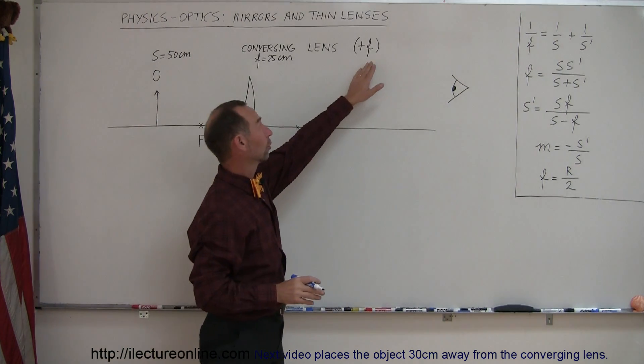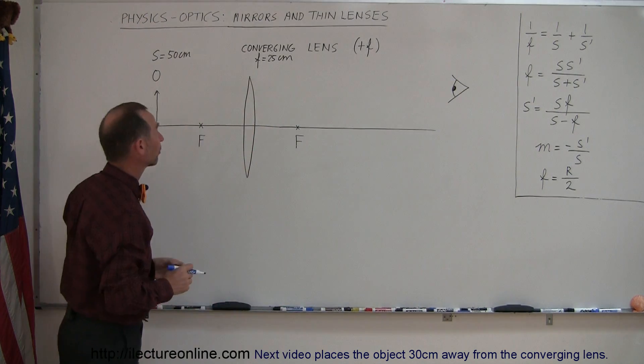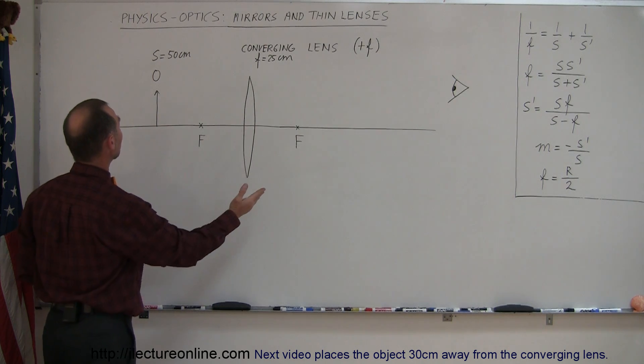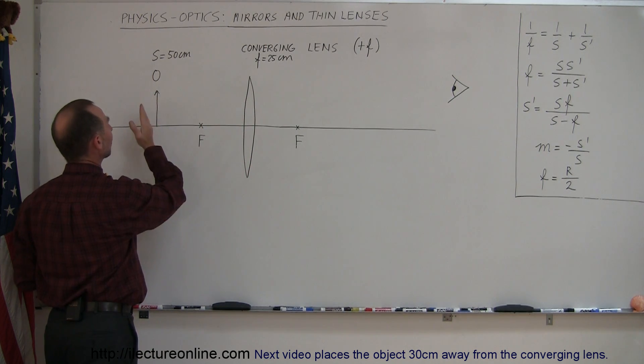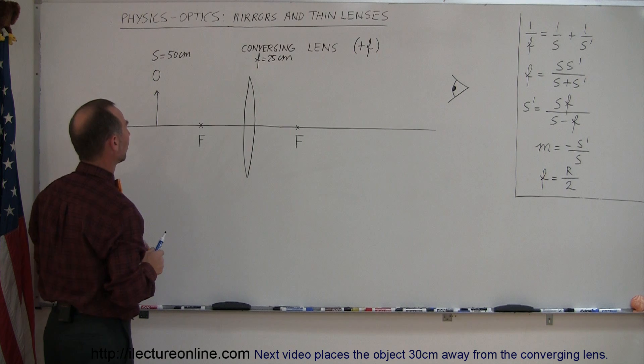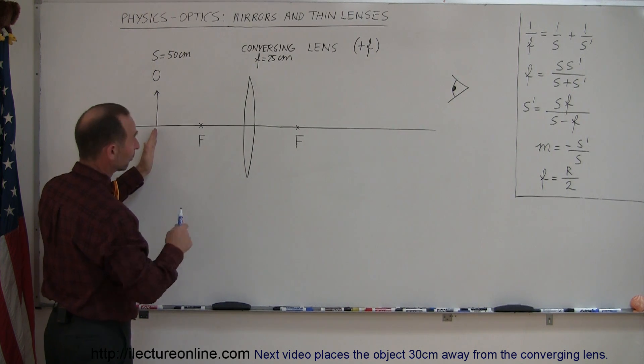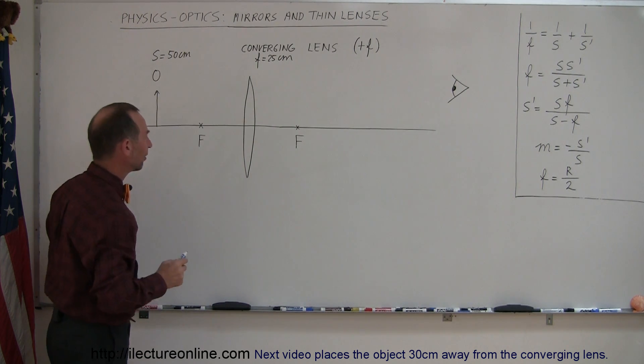For a converging lens, the focal length is positive, so it's a positive 25 centimeters. And in this case, we're putting the object exactly twice the focal distance away from the mirror, not mirror, but lens, and so that's 50 centimeters.